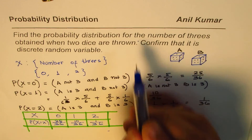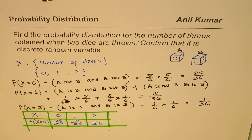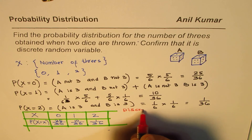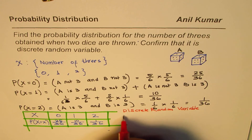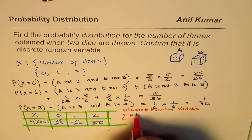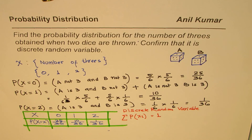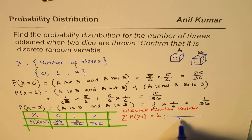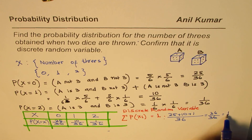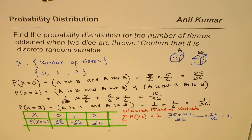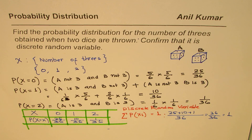The second part of the question asks us to confirm it is a discrete random variable. To do that, we verify that the sum of all probabilities equals 1. Adding the numerators: 25 + 10 + 1 = 36, and 36/36 = 1. Since the probabilities sum to 1, we can confirm it is a discrete random variable.